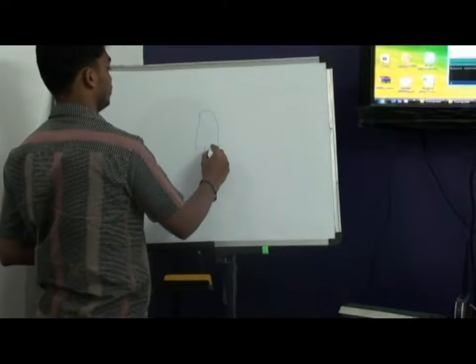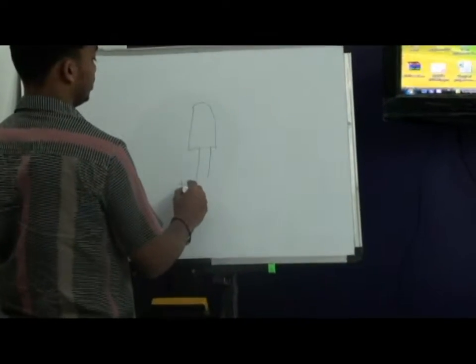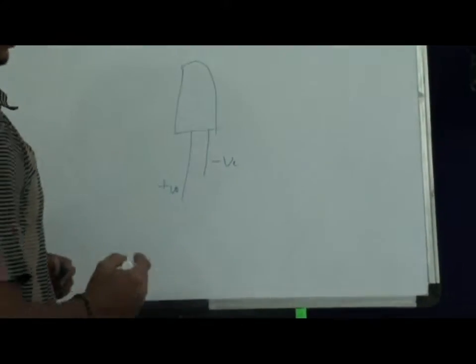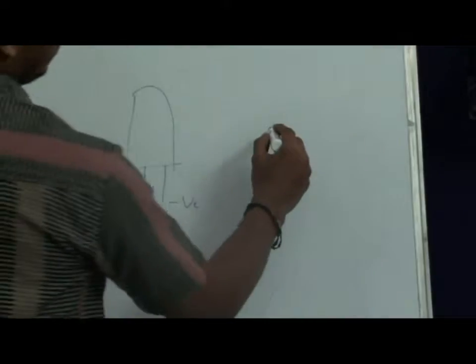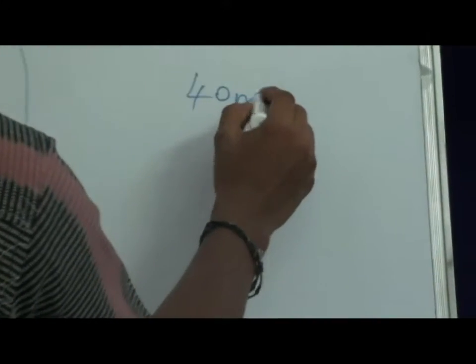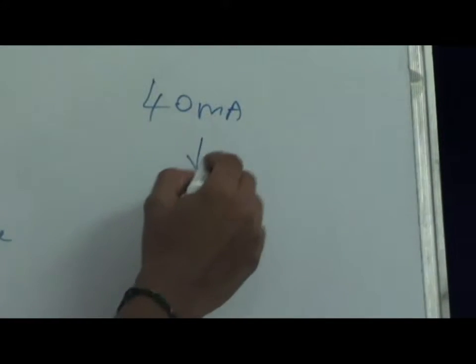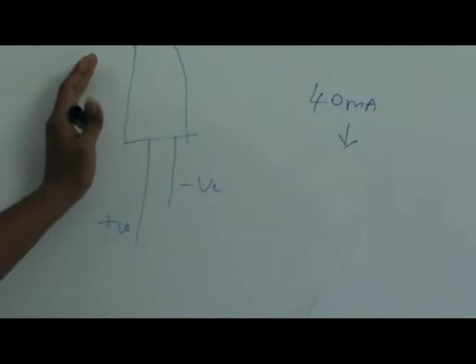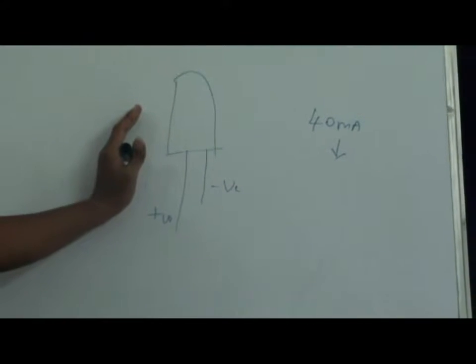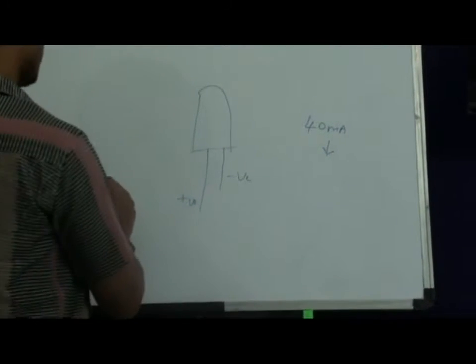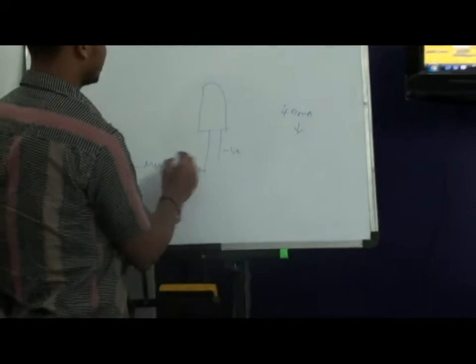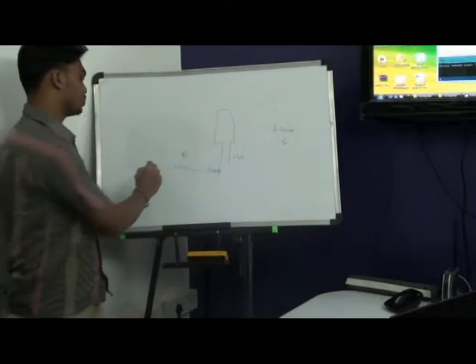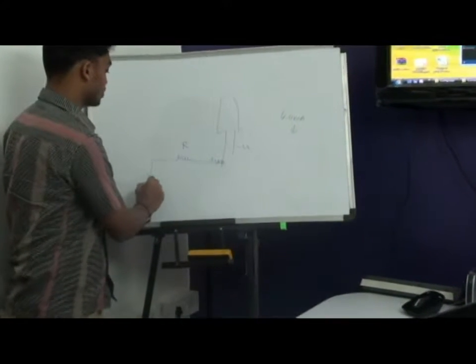This is an LED. Usually the positive will be the longer terminal and the shorter will be the negative terminal. In Arduino, 40mA of current is available in each digital IO pin. But the LED requires 20mA of current. So to limit the current, we are making use of one resistor and that resistor is connected in series with the positive terminal of the LED.